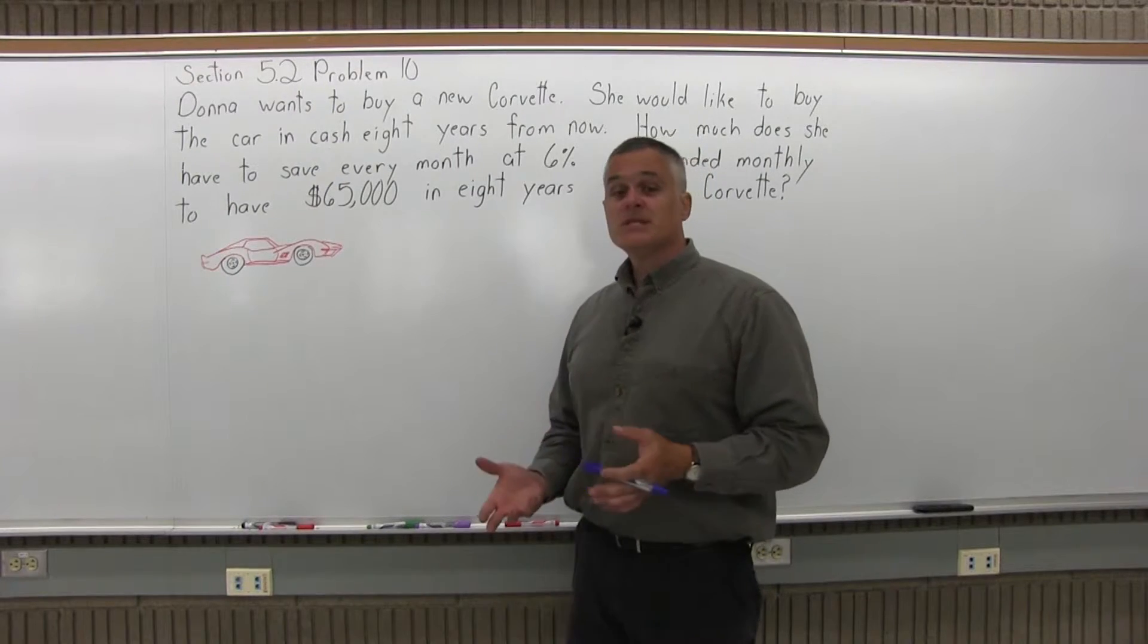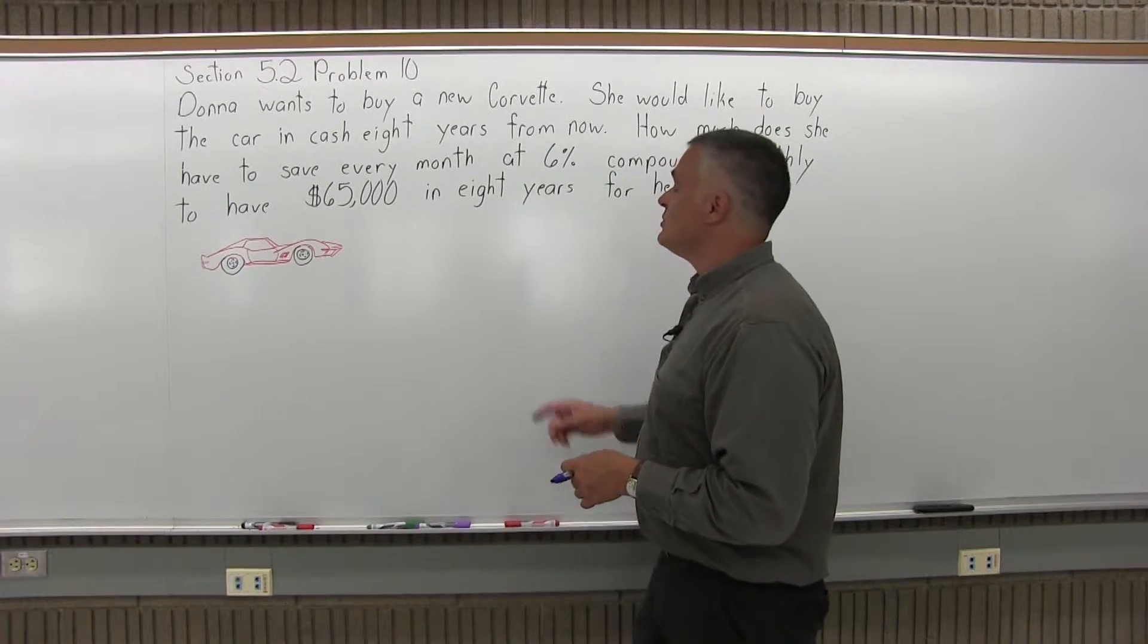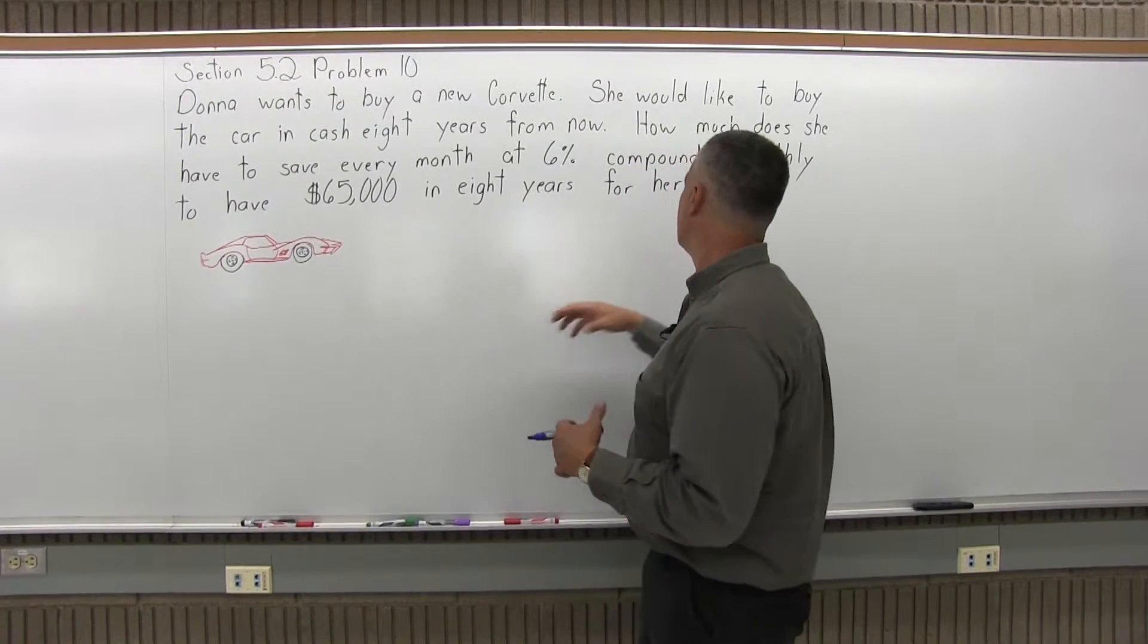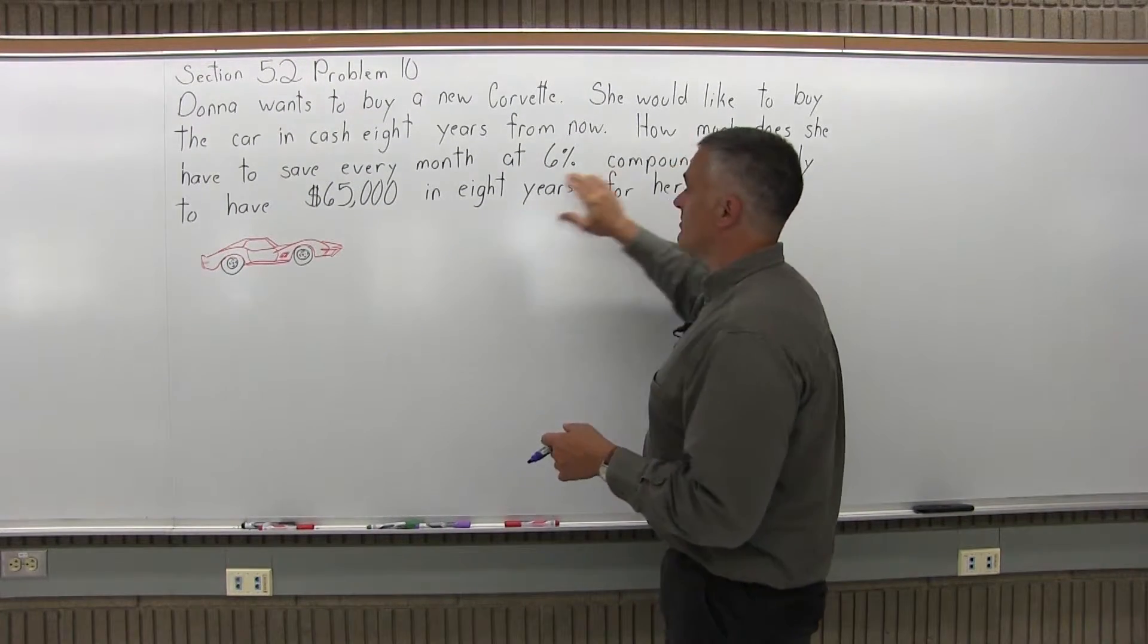So what type of problem is this? This is a sinking fund because you know the goal. This is what the end amount has to be and you want to calculate how much you save on a regular basis, and in this case it's every month.